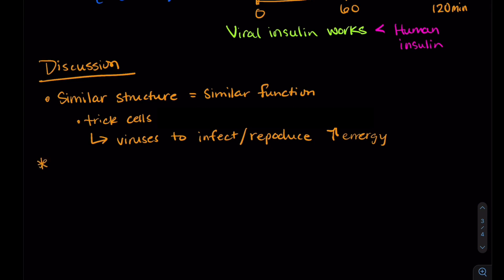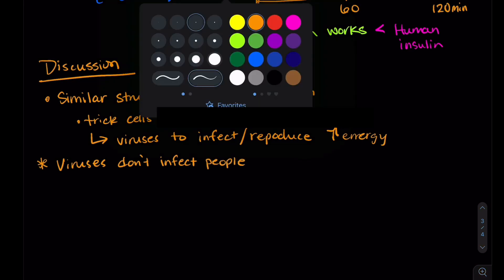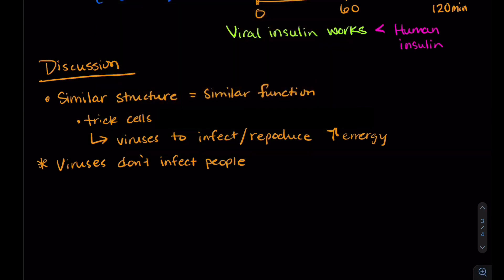Now, don't fret because these viruses that make this viral insulin that these researchers found don't infect people. They only infect fish, reptiles, and insects.